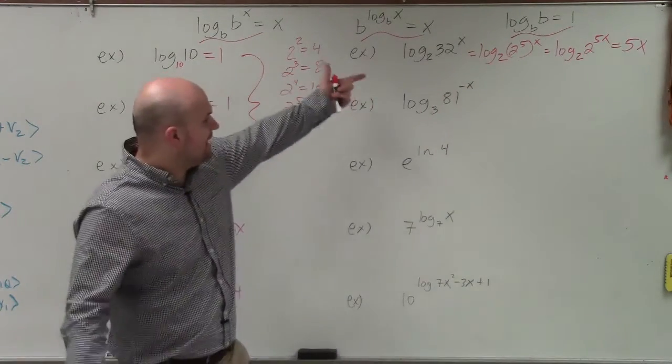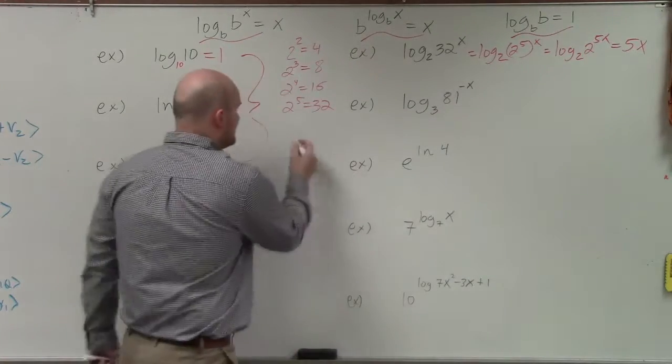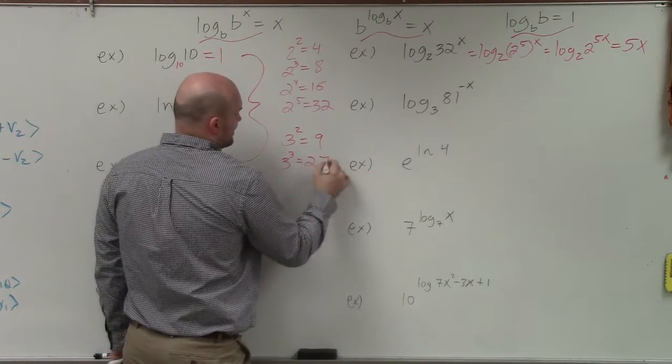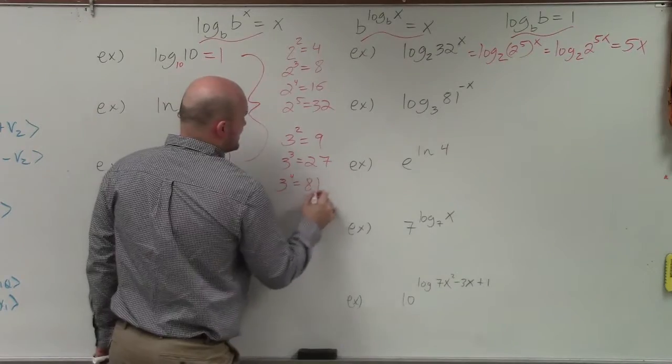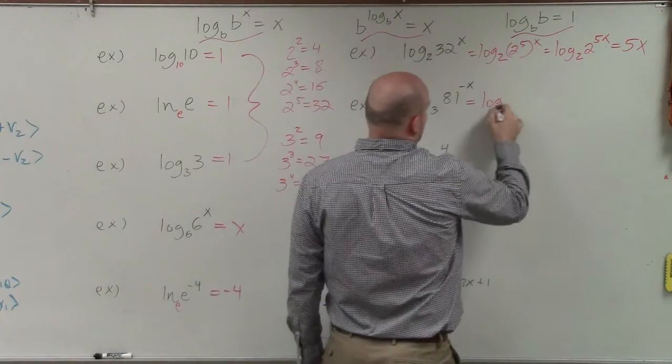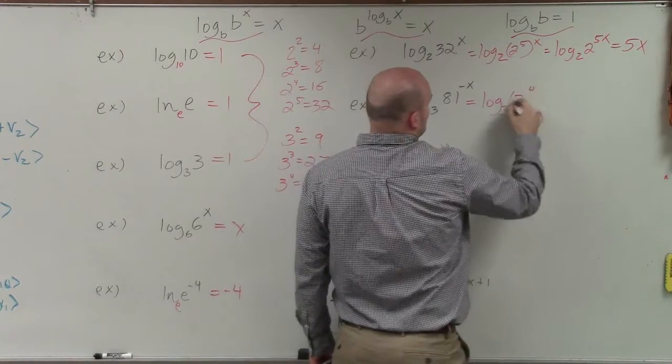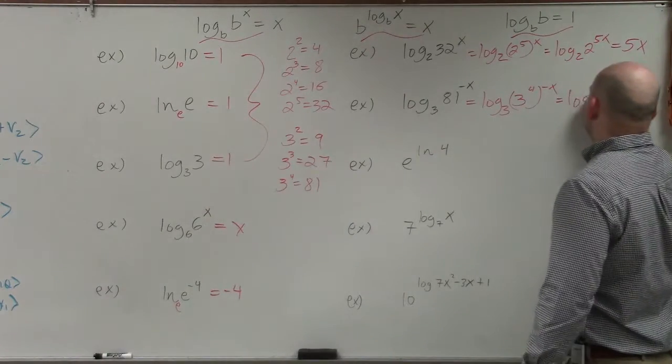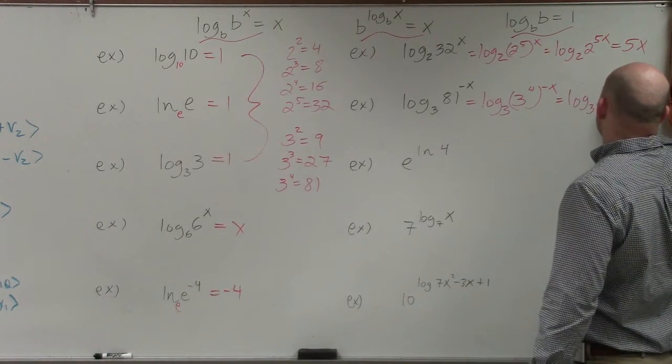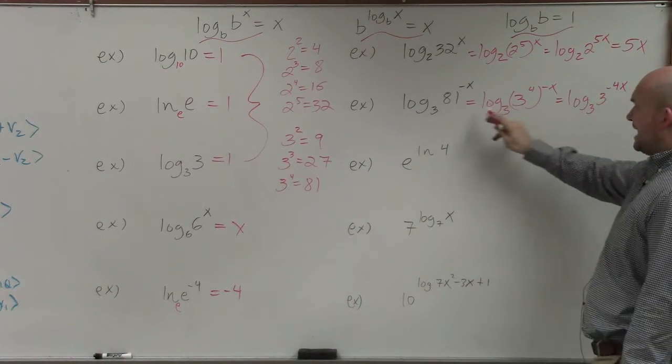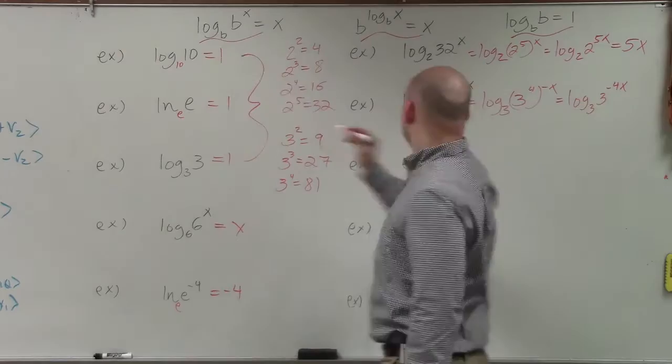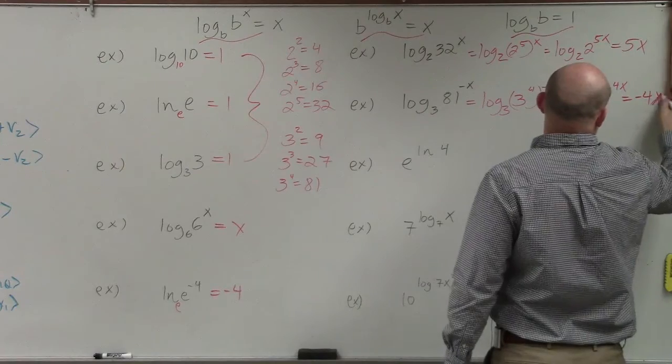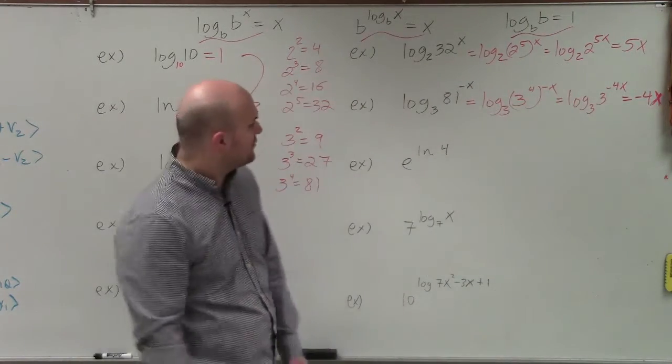So exact same thing happens here. 3 and my 81 are not the same. However, if you start writing out 3 raised to the power, you have 9, 3 cubed is 27, 3 to the fourth power is 81. So therefore, I can write this as log base 3 of 3 to the fourth raised to the negative x. Then again, simplifying this, I have log base 3 of 3 to the negative 4x. Well now, the log base 3 of 3 follows this rule. They're going to divide out. So therefore, you're just left with negative 4x.